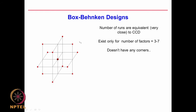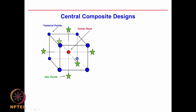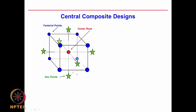Then we have the Box-Behnken design. It is similar to CCD, except that instead of using corner points it takes the points at the edges of the cube — that is the only difference. So it does not have the corners; it takes the edges of the cube.